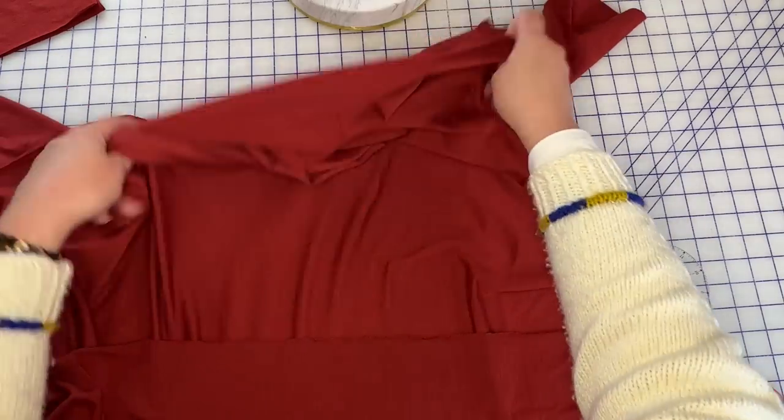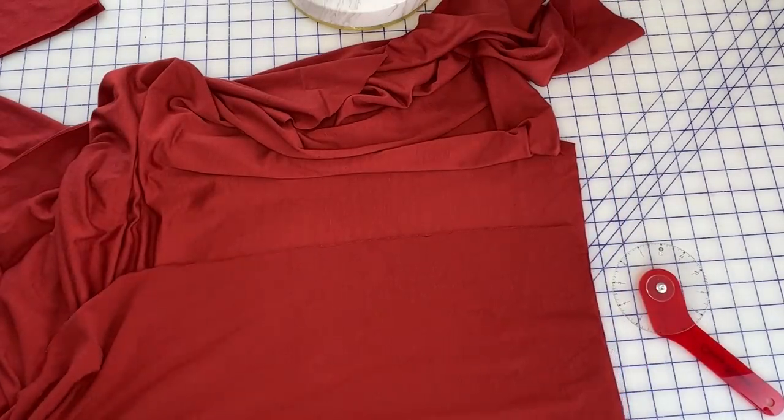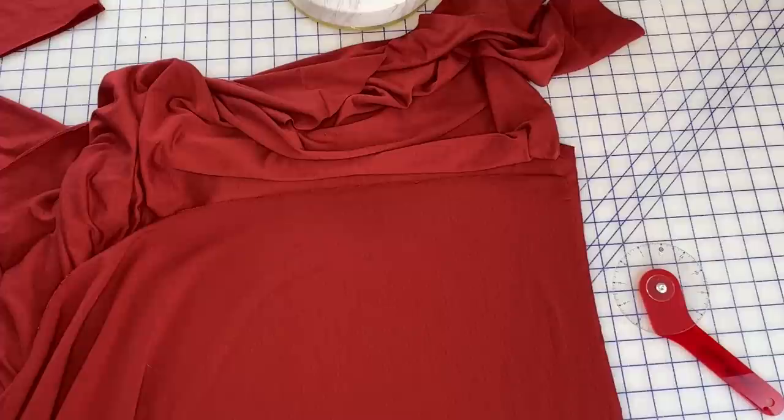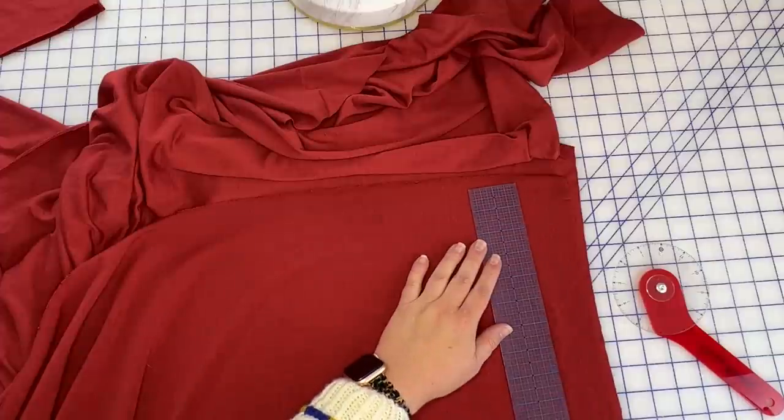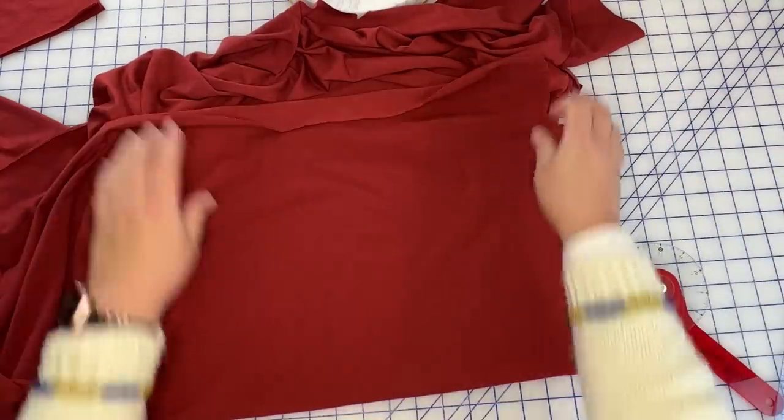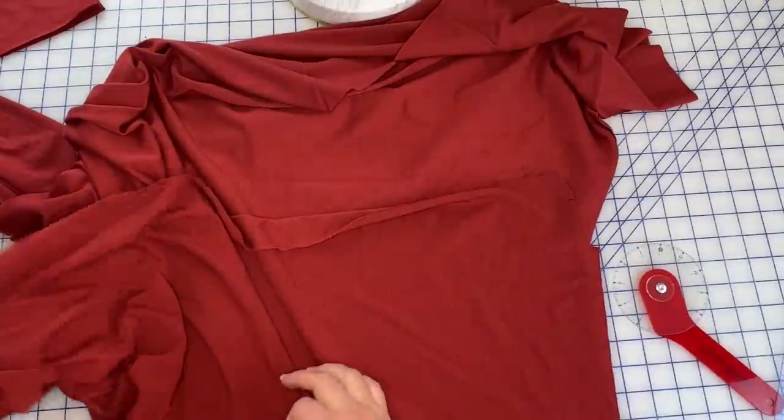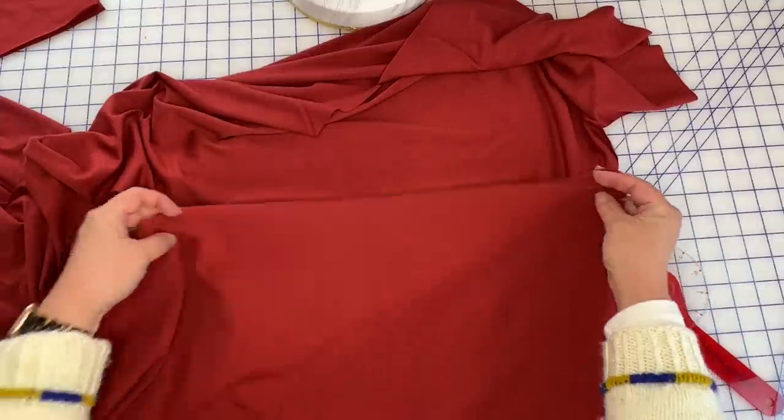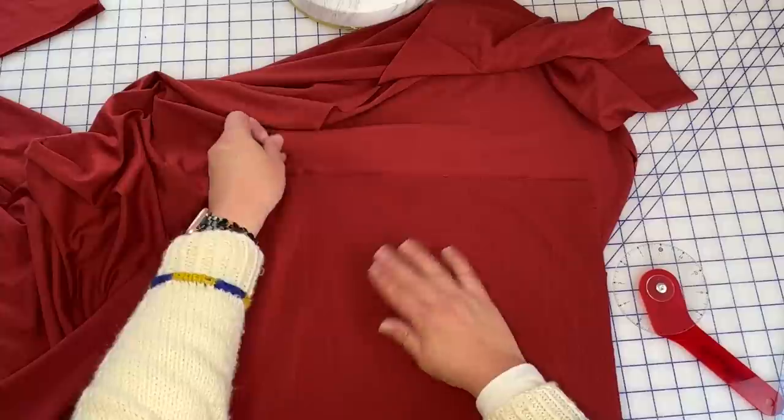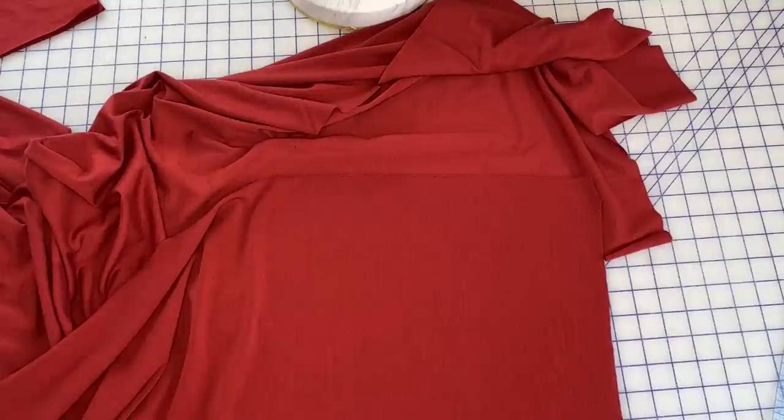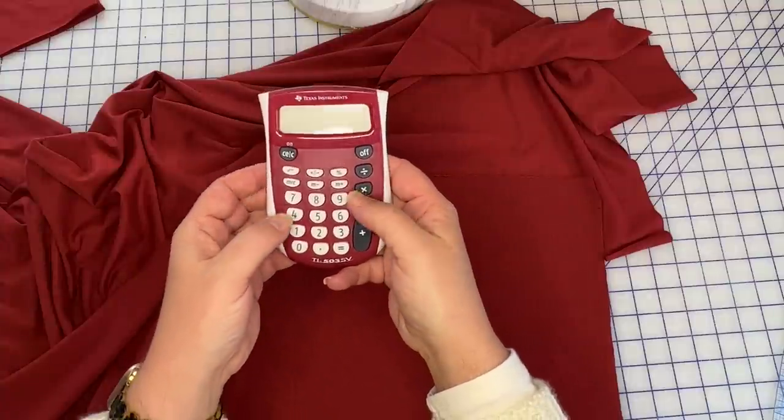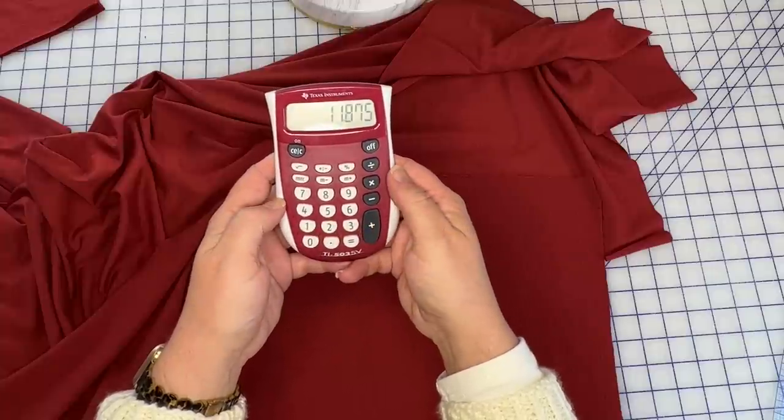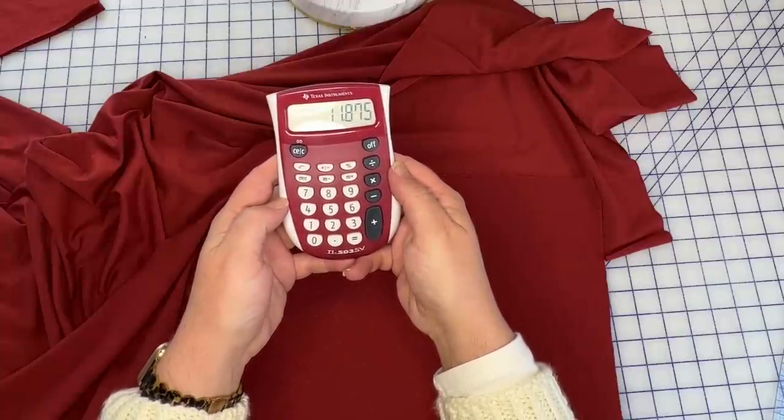All right so I like to cut my neck bands on the fold so we can take our calculator again. Let me just get this all laid out nice and neat. Okay all right that should be good. All right so we get our calculator back out here. And 23 and 3 quarters so 0.75 divided by 2 is 11.875 which is 11 and 7 eighths. And I just know that 8.875 is seven eighths because I've done this a long time.